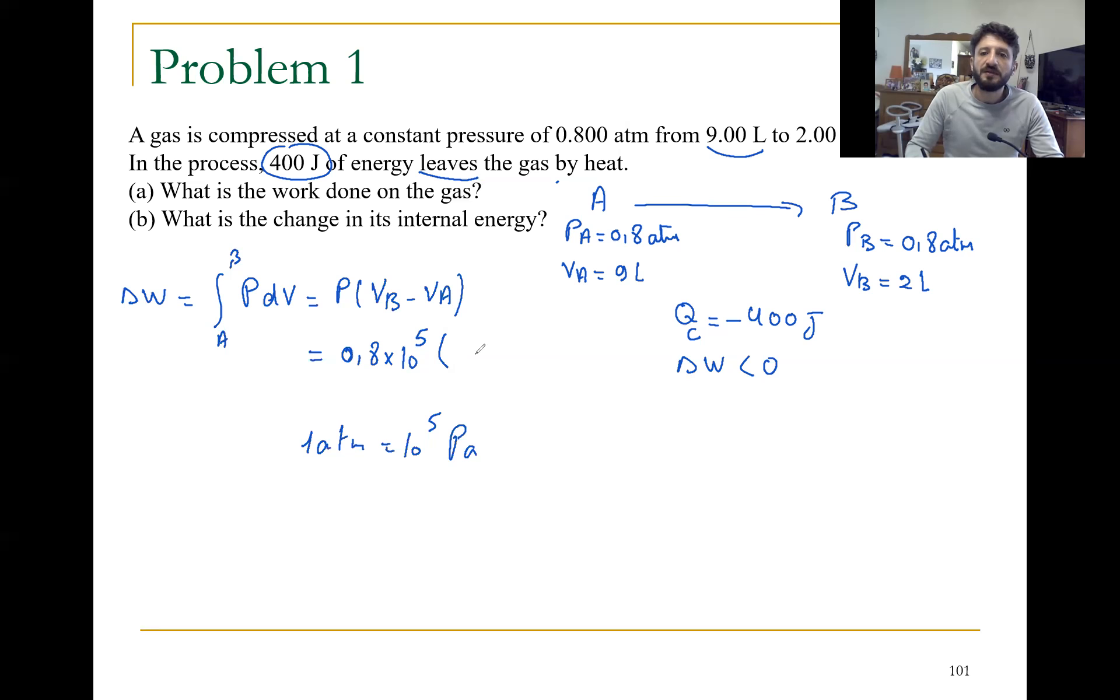We have VB equals 2 liters. Listen, here we have in liters: 1 liter equals 10^-3 m^3. So here we have VB equals 2 minus VA 9 times 10^-3 to put it in m^3. Like this we can calculate the work done, which must be negative.